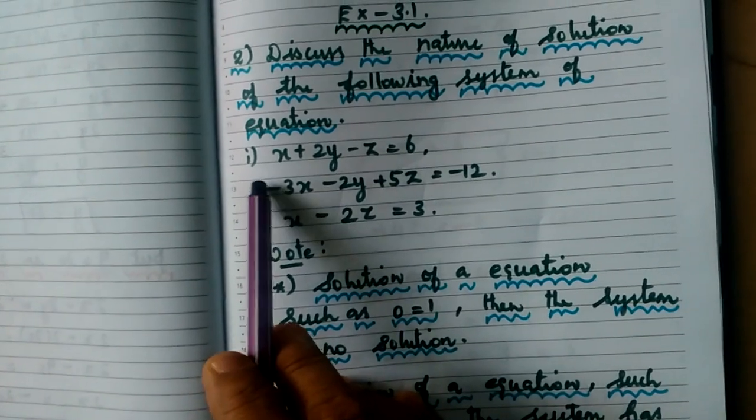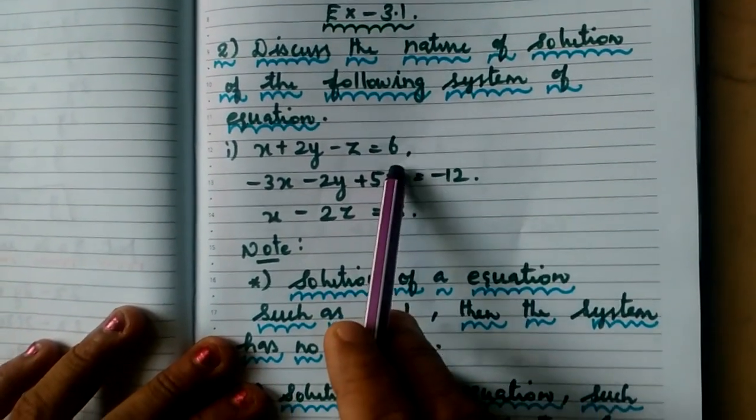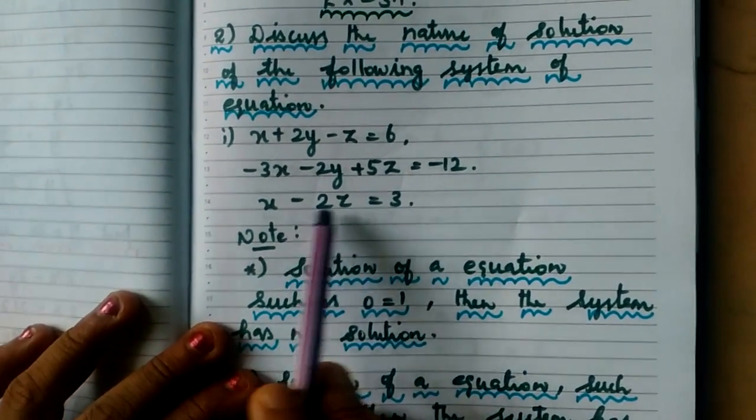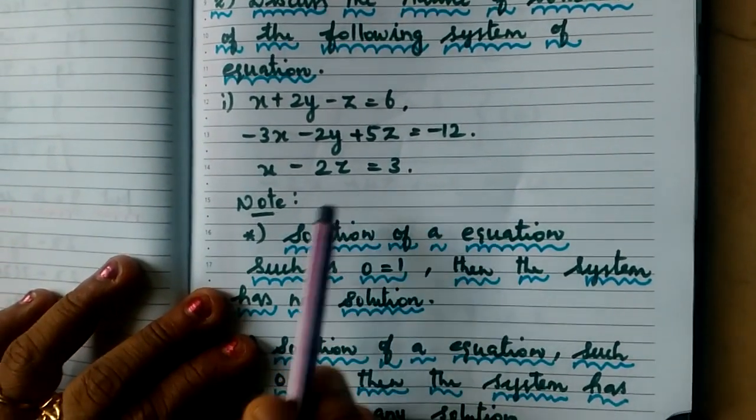So question number one from the second one: X plus 2Y minus Z equal to 6, minus 3X minus 2Y plus 5Z equal to minus 12, and X minus 2Z equal to 3. These are the three kind of equations.